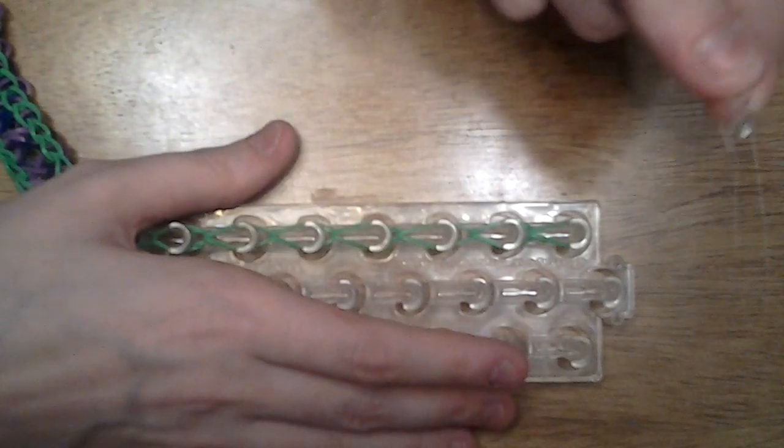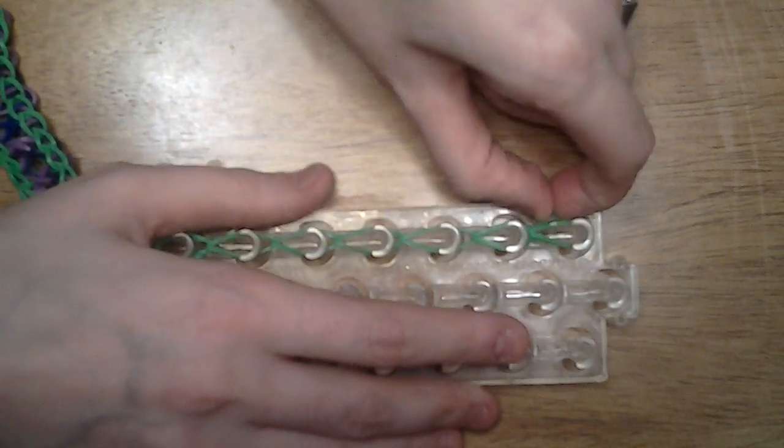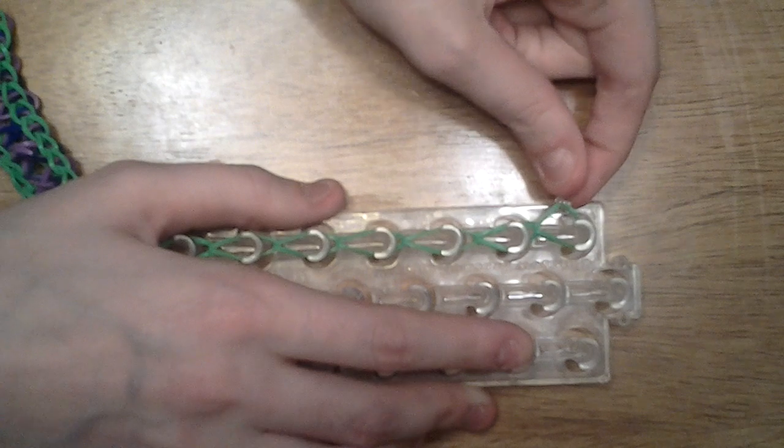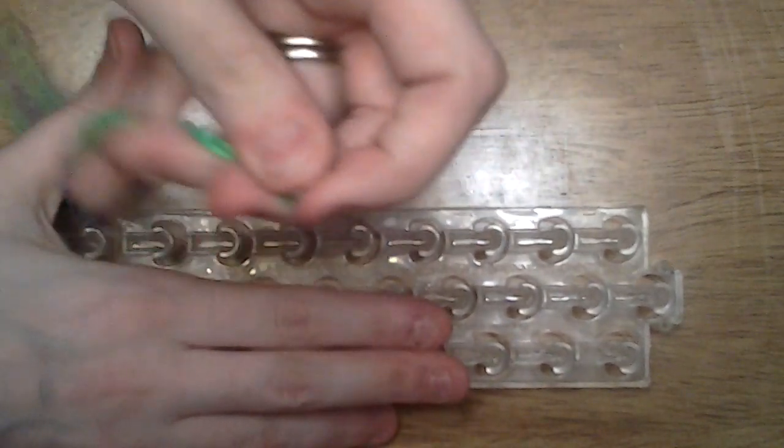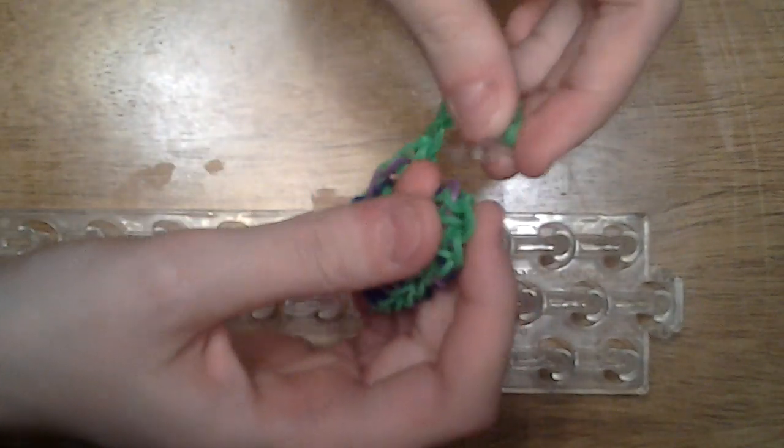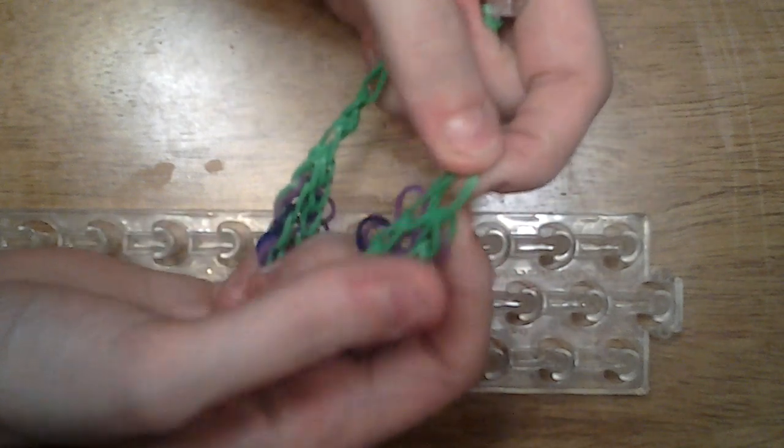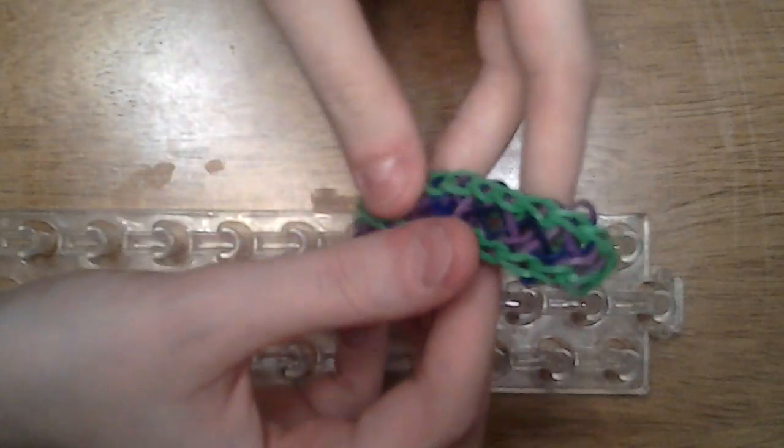And once you have all of your looping done, you're all set to add on your clip. Whatever clips that you may have, C-clips or S-clips, I do have S-clips. And I just add them just like that. And once you have your clip attached, you can take your extension off of the loom, attach it to the other side. And there you have your completed cat's cradle bracelet.